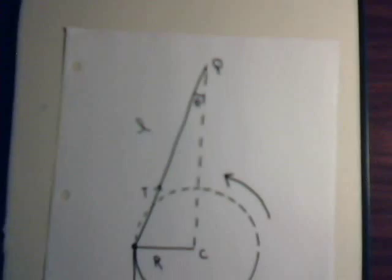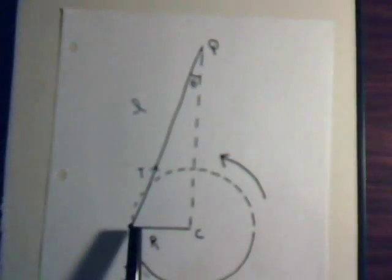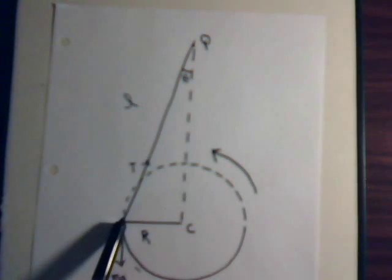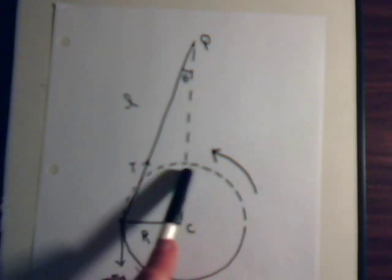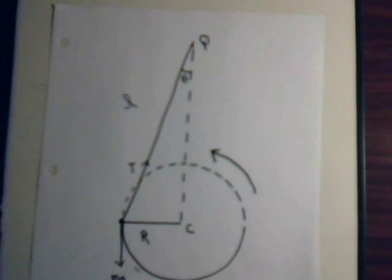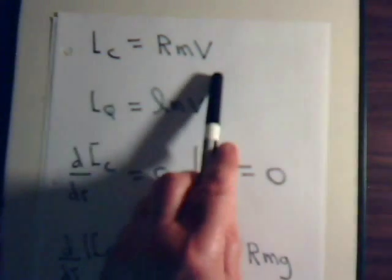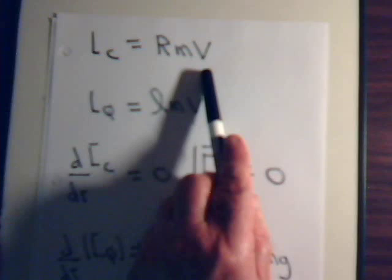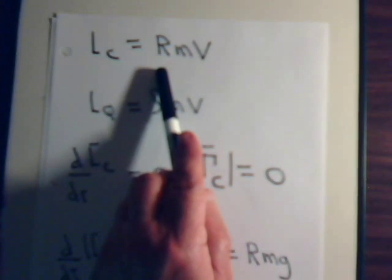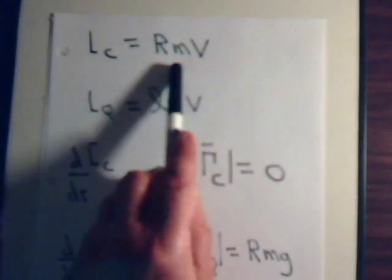Here is our conical pendulum — a very simple setup: a rope with a mass attached to it, being swung so that the mass goes about a circle. What we found back in video number 26 is that if we consider the angular momentum of the system with respect to point C, its value is rmv — that's the tangential velocity and the radius of the circle — and that is constant throughout.